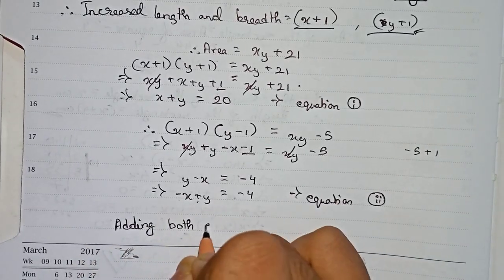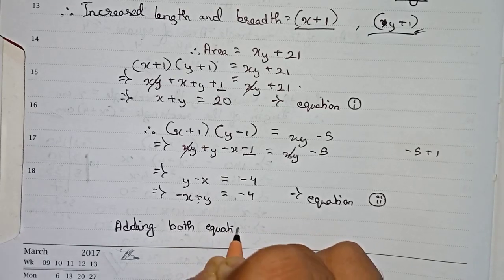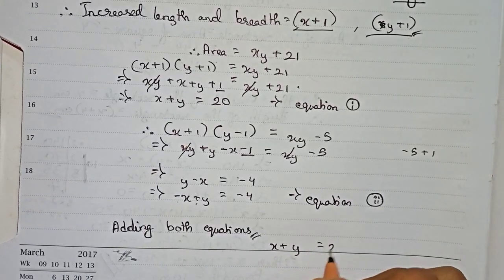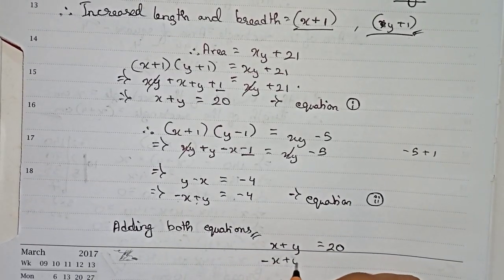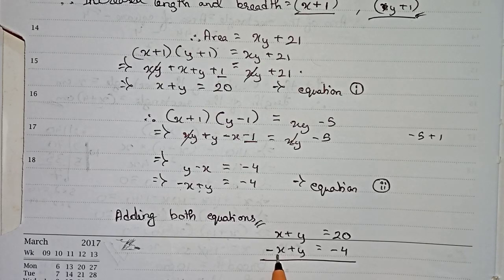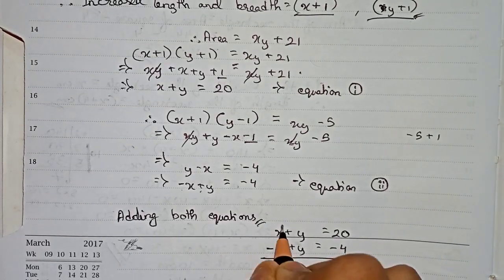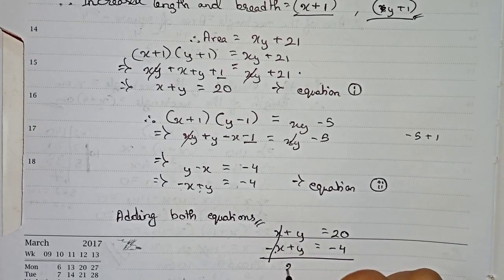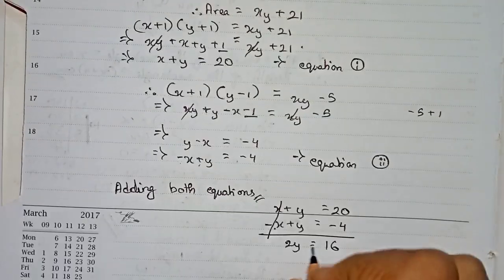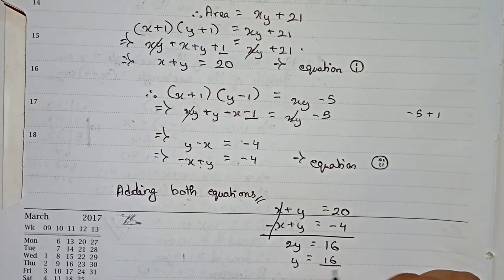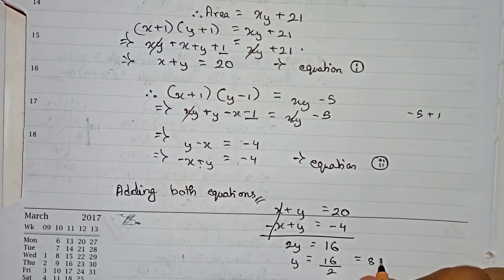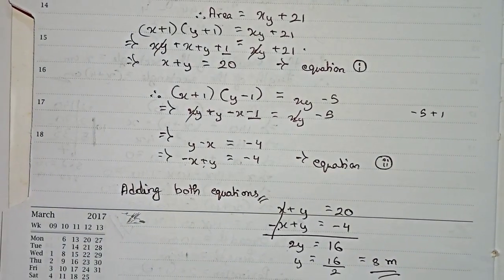Now we add both equations. Equation 1 is x + y = 20, and equation 2 is -x + y = -4. Adding them: x and -x cancel out, and y + y gives 2y. On the right side, 20 + (-4) = 16, so 2y = 16, therefore y = 16/2 = 8. So the breadth y is 8 meters.